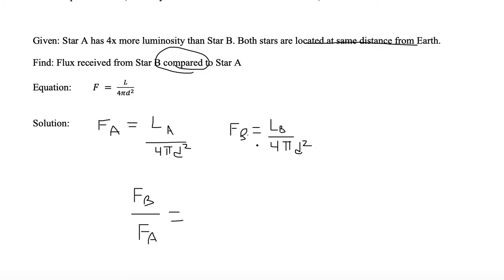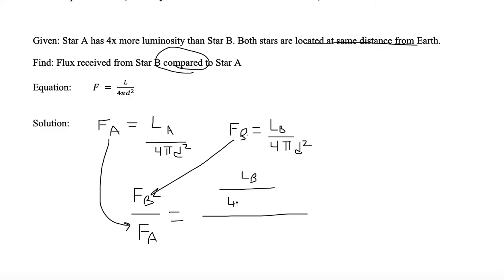We're going to take the entire equation for flux of B and divide it by the entire equation for flux of A. So there's F of B in the numerator and F of A in the denominator. Now we substitute in the right-hand side: the luminosity of B divided by four pi d squared in the numerator, and the luminosity of A divided by four pi d squared in the denominator.